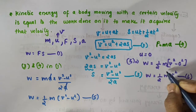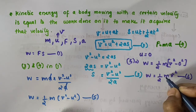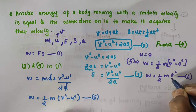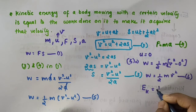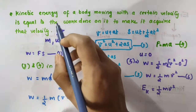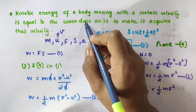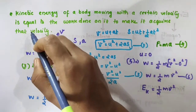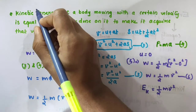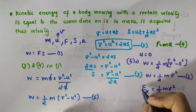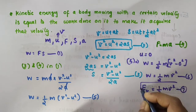This ½MV² is actually the kinetic energy possessed by an object of mass M moving with a uniform velocity V. Kinetic energy is represented by E subscript K, so Eₖ = ½MV². Because the kinetic energy of a body moving with a certain velocity equals the work done on it to make it acquire that velocity, Eₖ = ½MV² — equation number 7. The kinetic energy is directly proportional to the square of the velocity, so kinetic energy increases with speed.